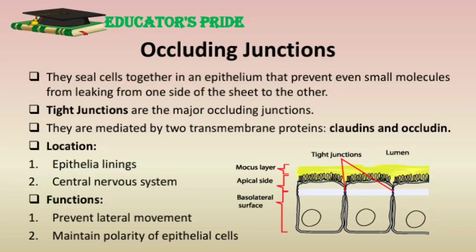The first type of junction is occluding junctions. They seal cells together in an epithelium in such a way that prevents even small molecules from leaking from one side to the other. Tight junctions, or zonula occludens, are a common type of these junctions. These are the closest points of contact between adjacent cells. They are mainly present in epithelial lining and the central nervous system, forming the blood-brain barrier. They prevent free passage of molecules, including ions, across an epithelial sheet in the spaces between cells. They also maintain the polarity of epithelial cells by preventing the diffusion of molecules between the apical and basolateral regions of the plasma membrane. Tight junctions are mediated by two transmembrane proteins: claudins and occludin.